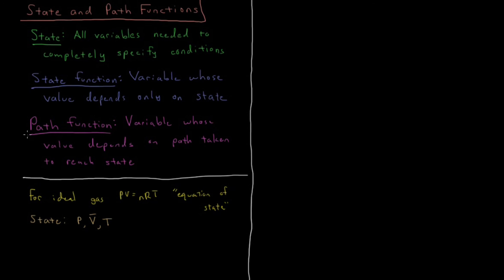Alternatively, you can have a path function, which is the opposite—a variable whose value depends on the path taken to prepare a state. If you have something like heat or work, those are path functions, and they depend on the way in which you achieve that state. It depends on whether you heated it up, cooled it down, expanded it, compressed it, and how you went through different states to achieve your final state.